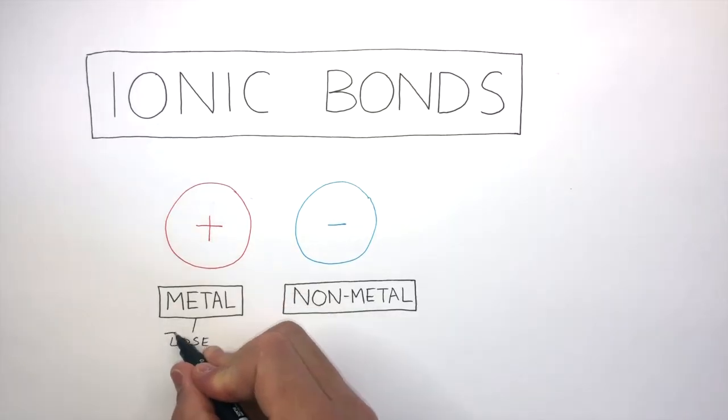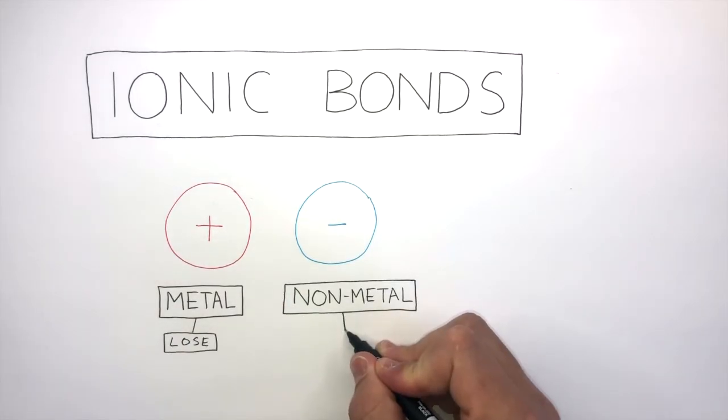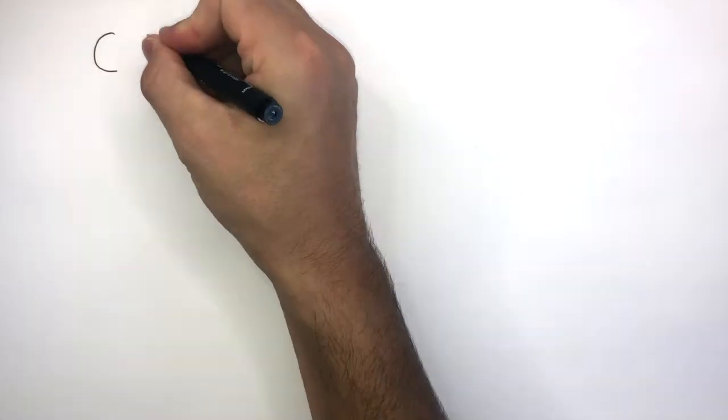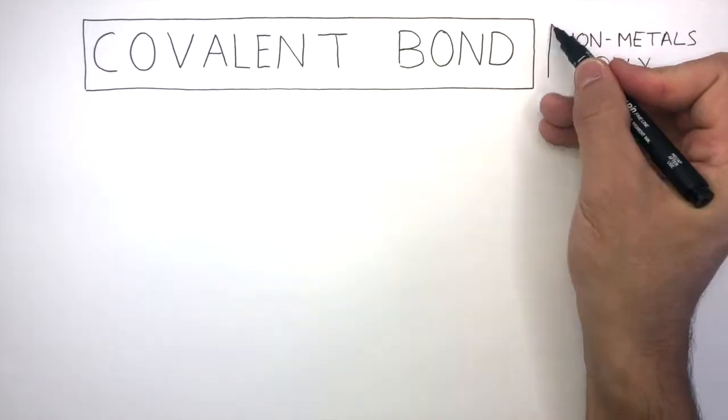Metal atoms will lose electrons to have a full outer shell and non-metal atoms will gain electrons to have a full outer shell. So covalent bonds are different. They exist just between non-metal atoms.